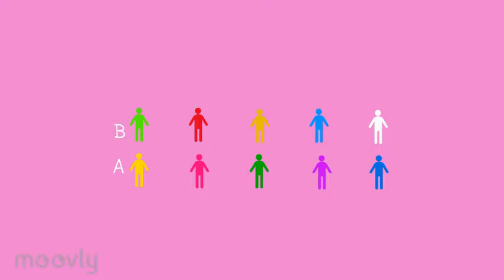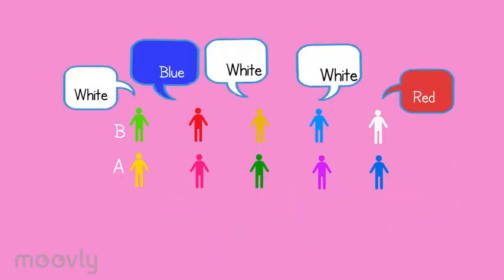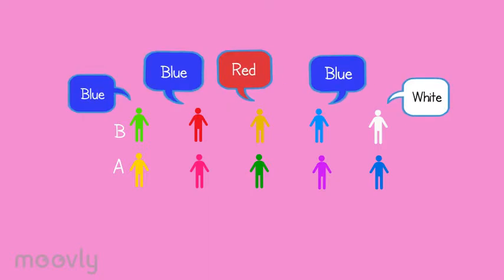The persons in line A now say to the person in front of them a color: red, white, or blue. The person in front of them repeats the color out loud. Now it's person B's turn to say a color and person A repeats the color out loud.